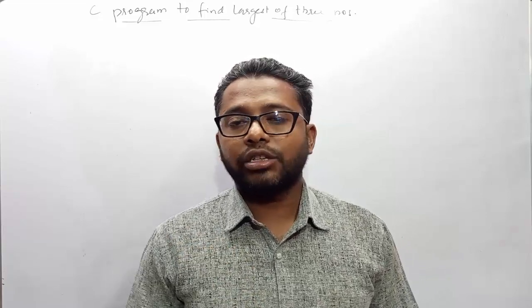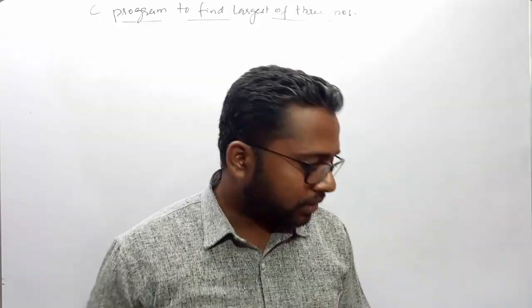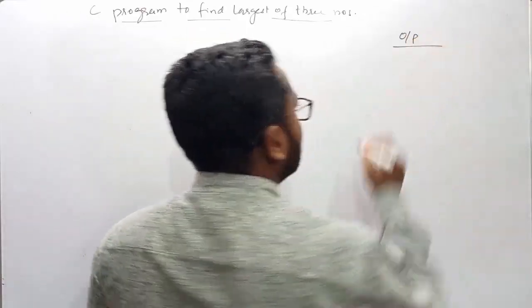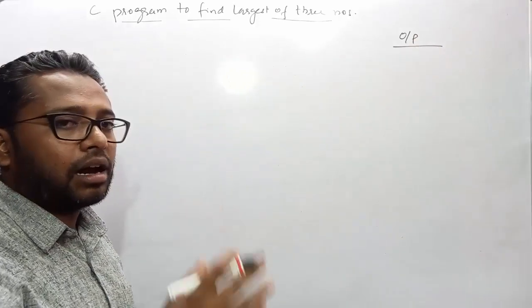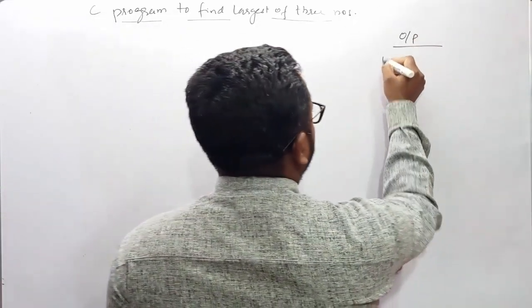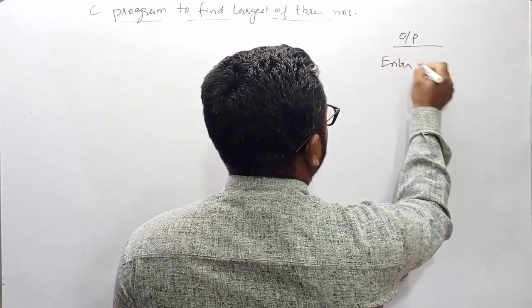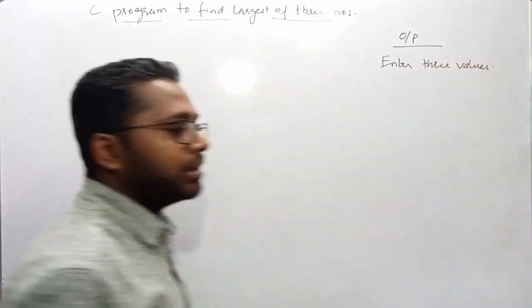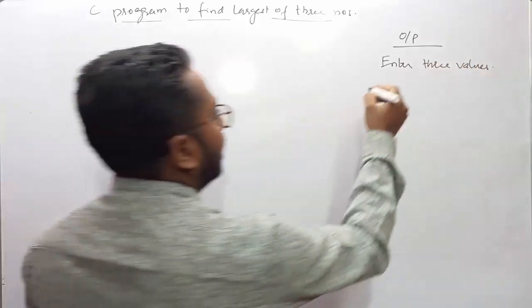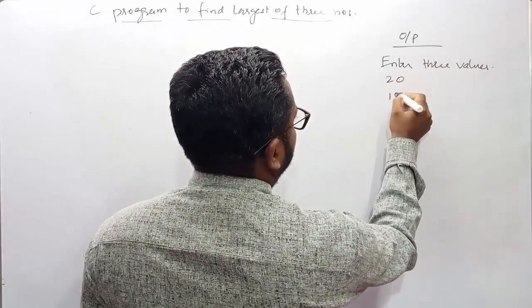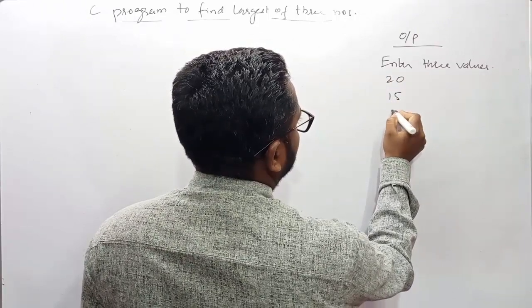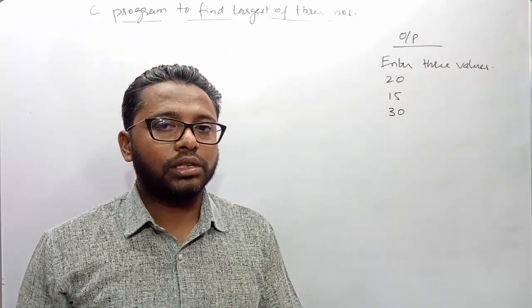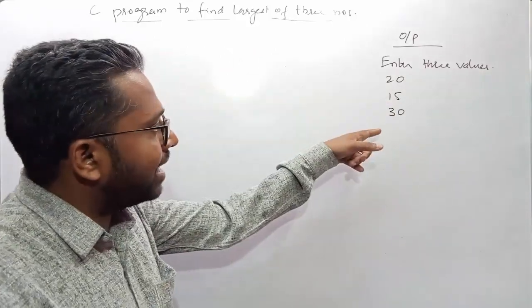Now let's start our discussion on writing a C program to find the largest of three numbers. Let's first look at the expected output: when this program executes, it asks the user to enter three values — for example, 20, 15, and 30.